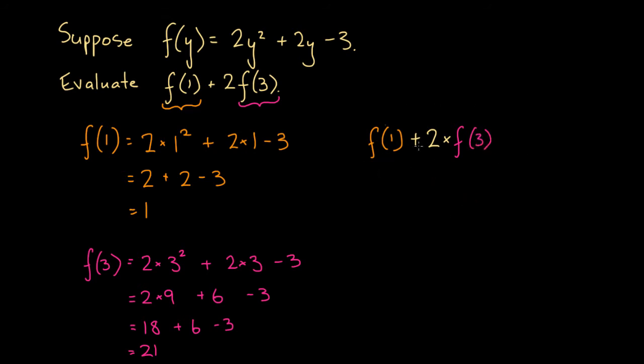Well, let's rewrite this expression. Instead of writing f of 1, let's write 1. Instead of writing f of 3, we'll write 21, since we've found these values. So we can rewrite this as equal to 1, and then have plus 2 times, instead of writing f of 3, we're going to write 21.